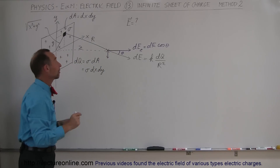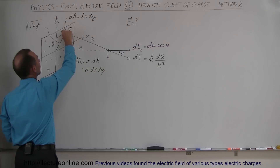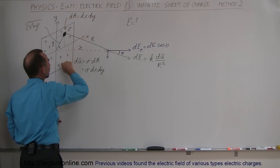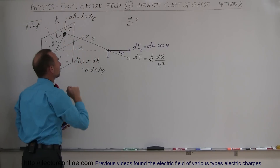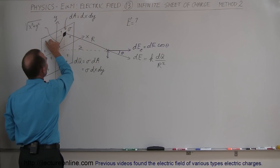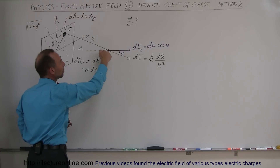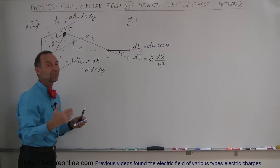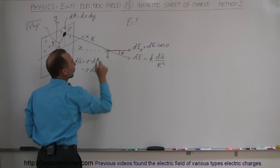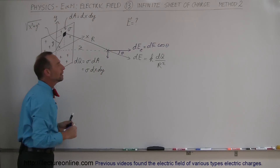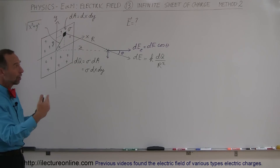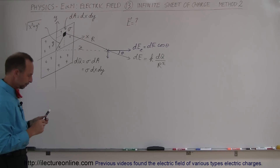Why don't I care about the parallel component? Because as I integrate across the entire sheet, for every element dQ contributing a parallel component in one direction, there is a dQ on the opposite side contributing an equal and opposite parallel component. They cancel out. So the parallel component simply cancels as I integrate across the sheet, and only dE_z remains.